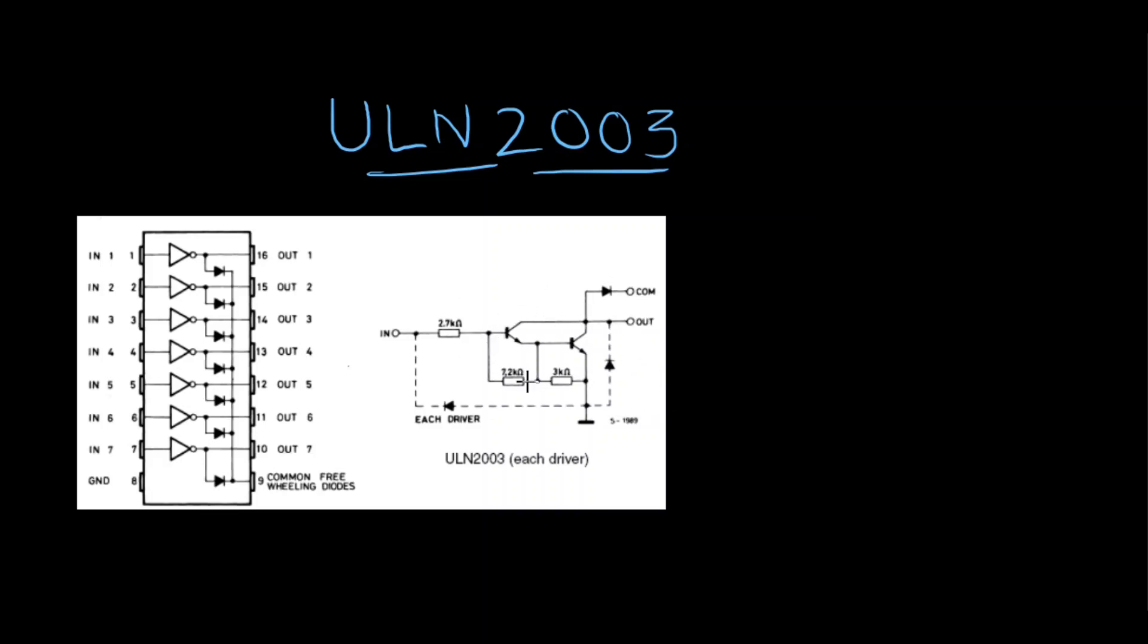The reason they are cascaded is it gives very high current amplification. That's the reason the transistors are paired with each other.